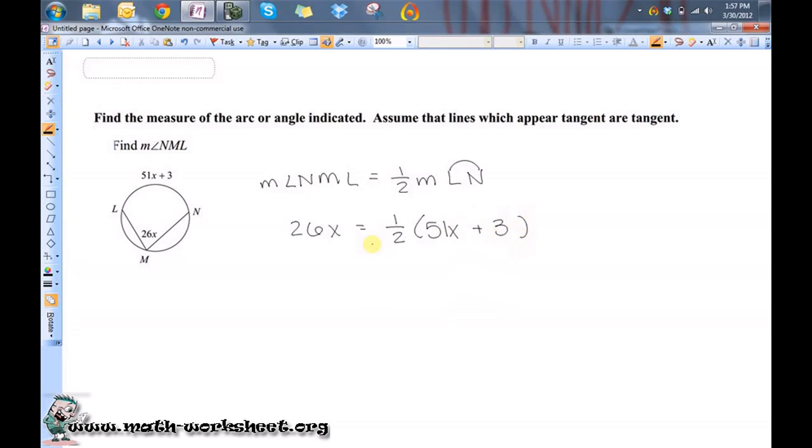So now I just need to do some algebra to solve for X. Multiply both sides by 2, so that's 52X equals 51X plus 3. Now I'm going to subtract 51X from both sides, so I'll get X is equal to 3.